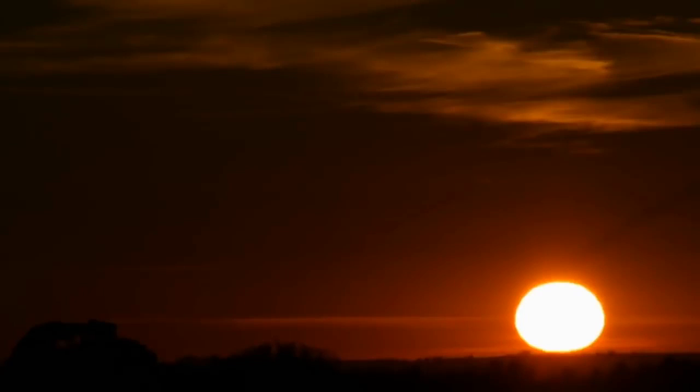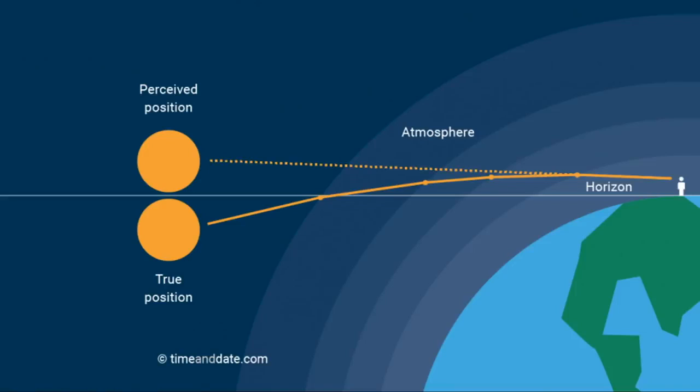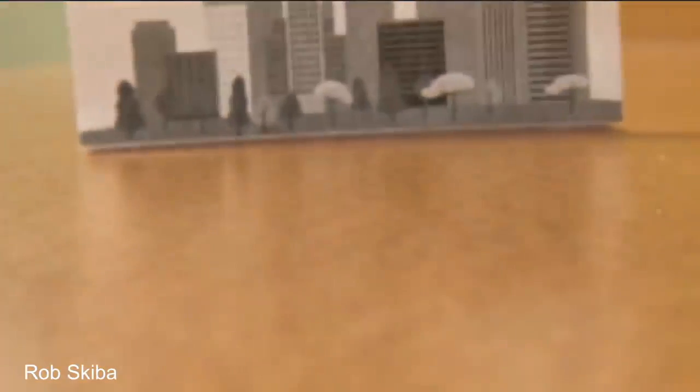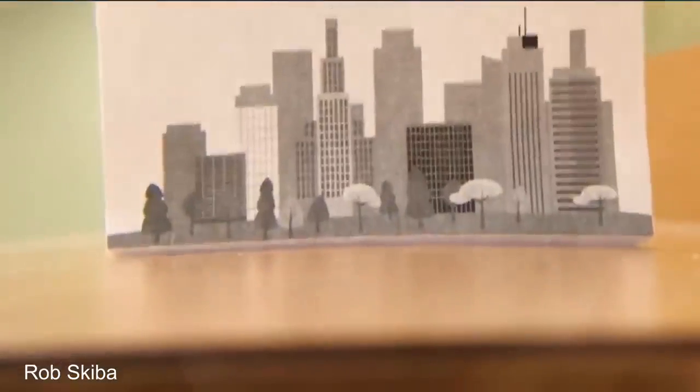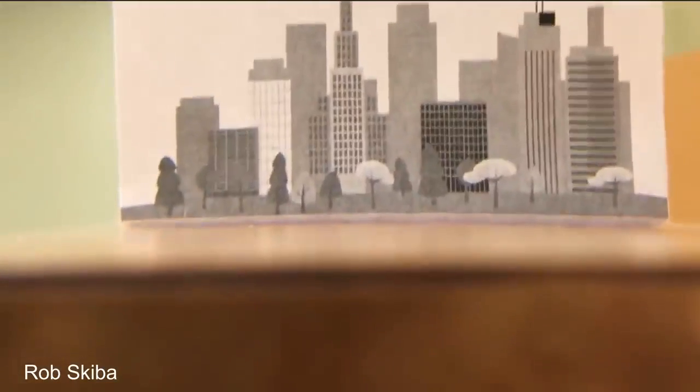Rob Skiba and other flat earthers are making several mistakes in their Skiba lensing claims. But the biggest mistake is the direction of the effect. It does not make things appear lower. It makes them appear higher. It is true that the atmosphere works like a lens, but not the kind of lens Skiba is using in his experiment, and not in the way he uses it. He uses a convex magnifying lens, which bends light away from the center, making objects appear bigger in all directions.